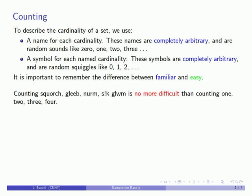Counting scorch, glebe, nirm, glup glup glup is no more difficult than counting one, two, three, four. They're both completely arbitrary sounds. And again, writing these symbols is no more difficult than writing these symbols. They're both completely arbitrary symbols that have no meaning other than what we assign to them.